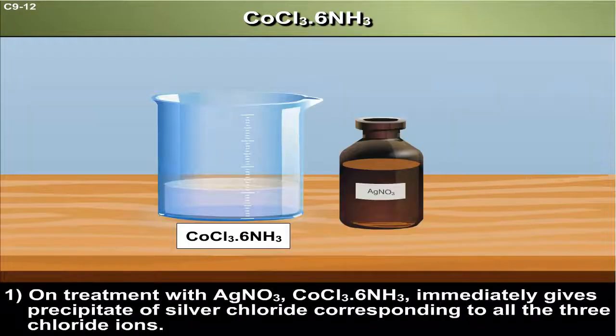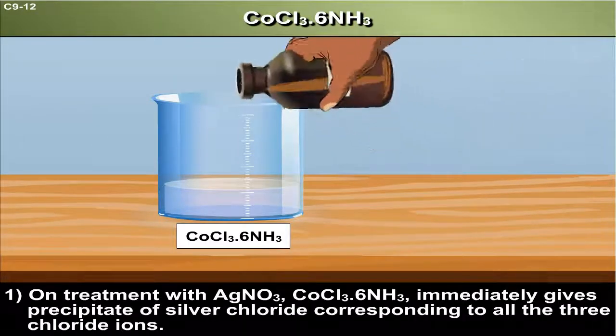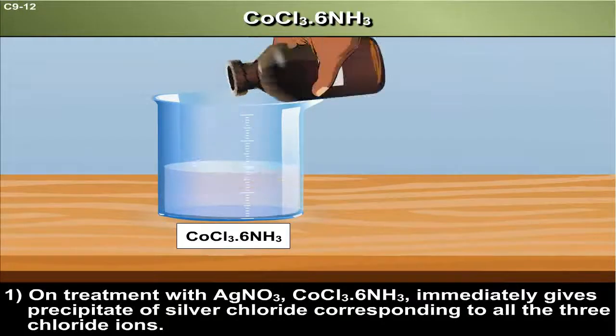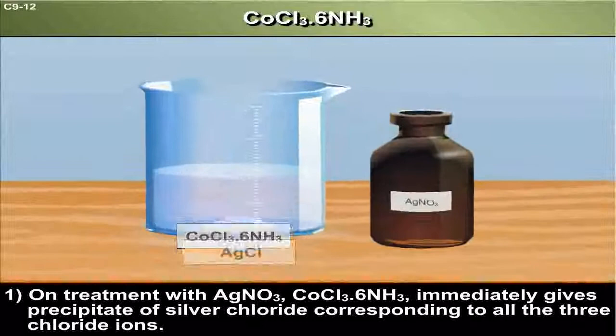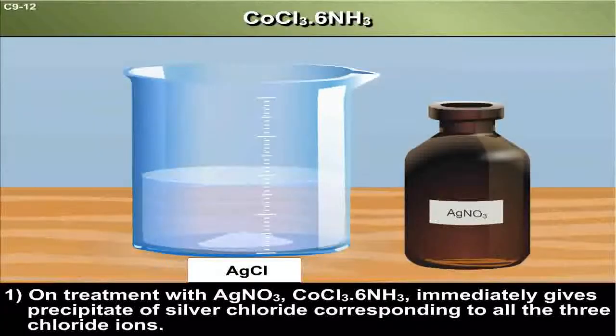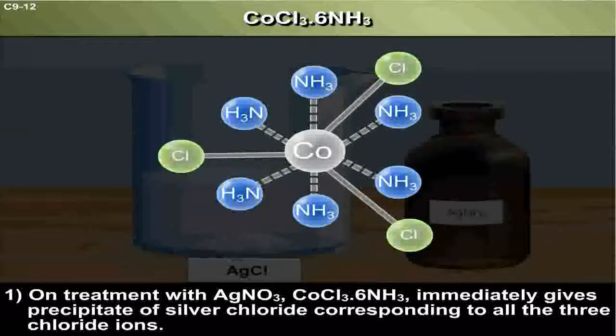CoCl3·6NH3. Point 1: On treatment with AgNO3, CoCl3·6NH3 immediately gives precipitate of silver chloride corresponding to all the three chloride ions.